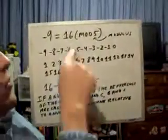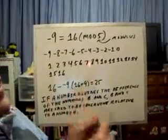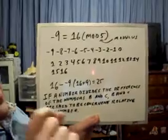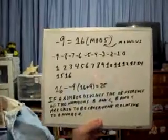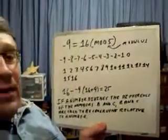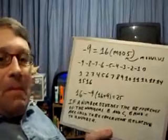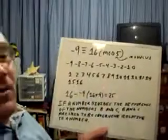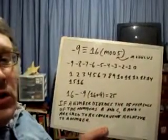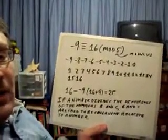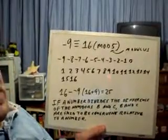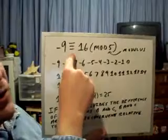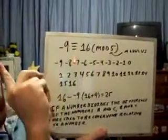And if these two numbers 16 and negative 9 are congruent to one another, then it is also said, and by the way, that is not an equal sign. Let me draw the third line up here. That's better. If you see two lines, it's an equal sign. If you see three lines, it's congruent. Watch that. Two lines is an equal sign. Three lines is a congruent sign.